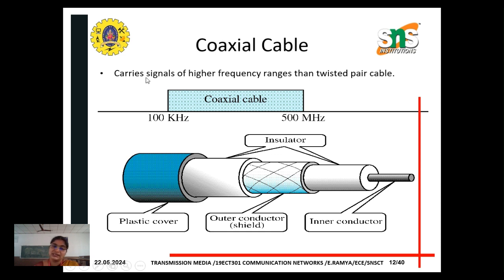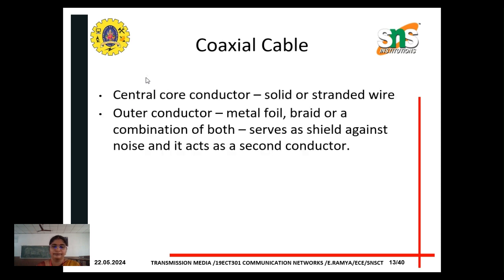Now let's move on to coaxial cable. Coaxial cable carries signals of higher frequency ranges than twisted pair cable. In twisted pair cable, we only handle kilohertz to megahertz. A coaxial cable has a center core conductor — solid or stranded wire — an outer conductor made of metal foil, and a braid or a combination of both.